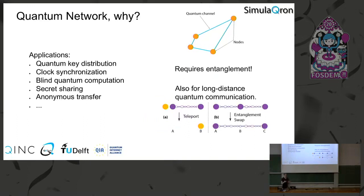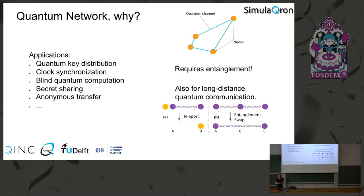Entanglement is the fundamental operation that a quantum network enables. In a classical network, the fundamental operation is to send a classical message from one node to another. You might think that in a quantum network, the fundamental operation is to send a qubit from one node to another, but in our view that's not really the case. The fundamental operation is to generate entanglement, because you can then use this entanglement to send qubits using teleportation.